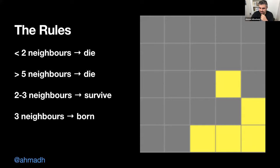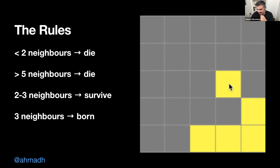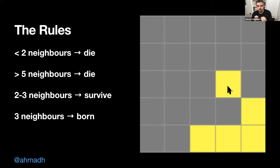This pattern — which looks a bit like a cigarette — ends up as the same shape again, but moved down by one square and to the right by one square. At the cell level, there's no such thing as movement — only death and life. But at the level of the whole grid, things can appear to move.